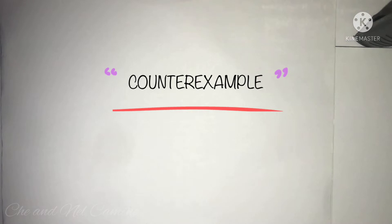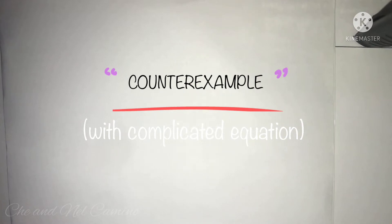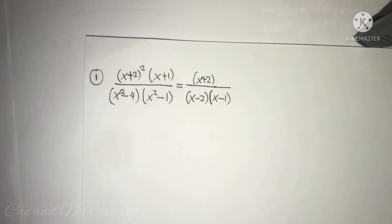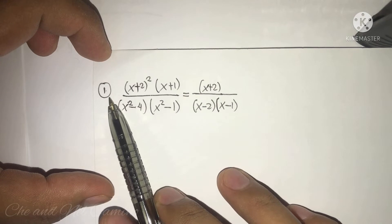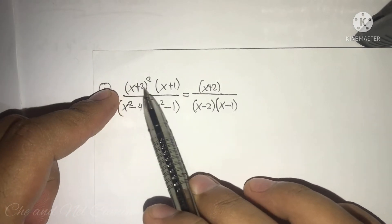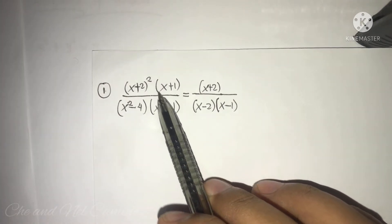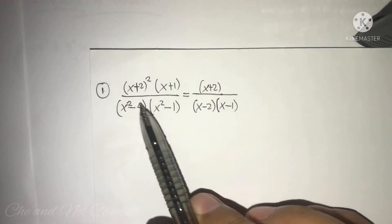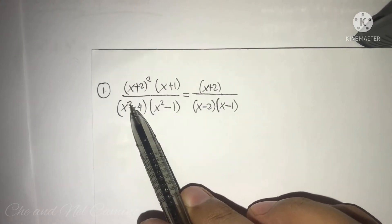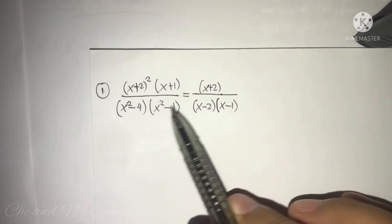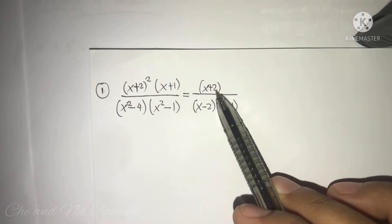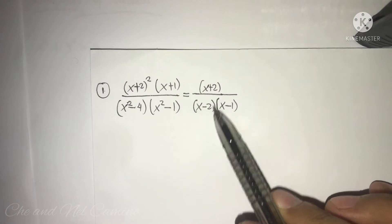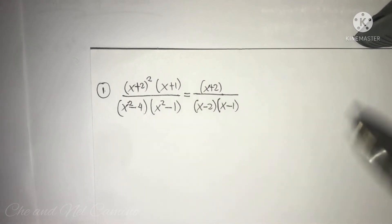Good day. In this video I am going to discuss a counter example with a complicated equation. The first problem we have is the quantity of x plus 2 to the power of 2, times the quantity of x plus 1, all over the quantity of x to the power of 2 minus 4, times the quantity of x to the power of 2 minus 1. That is equal to the quantity of x plus 2, all over the quantity of x minus 2 times the quantity of x minus 1.